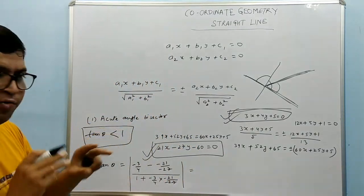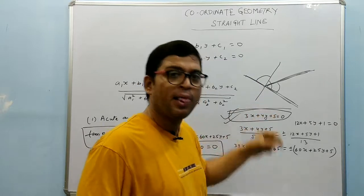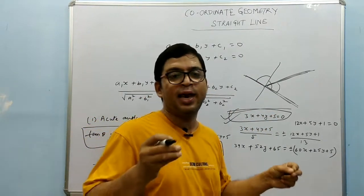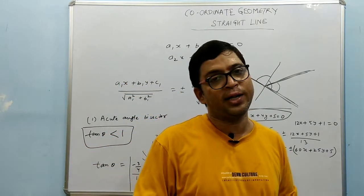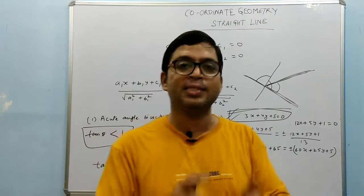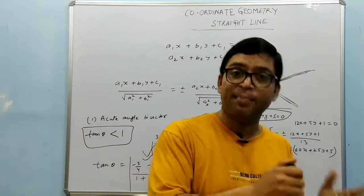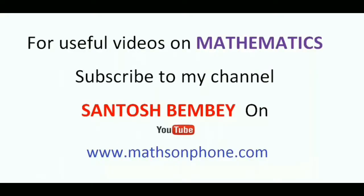To summarize the technique for finding the acute angle bisector: pick one line, pick one bisector, find the angle between them using tan theta equals m1 minus m2 over 1 plus m1 m2, and see whether tan theta is less than 1 or greater than 1. If tan theta is less than 1, the picked bisector is the acute angle bisector and the other is the obtuse angle bisector. For more useful videos, visit my channel Santosh Mimbi on YouTube or go to www.mathsonphone.com.